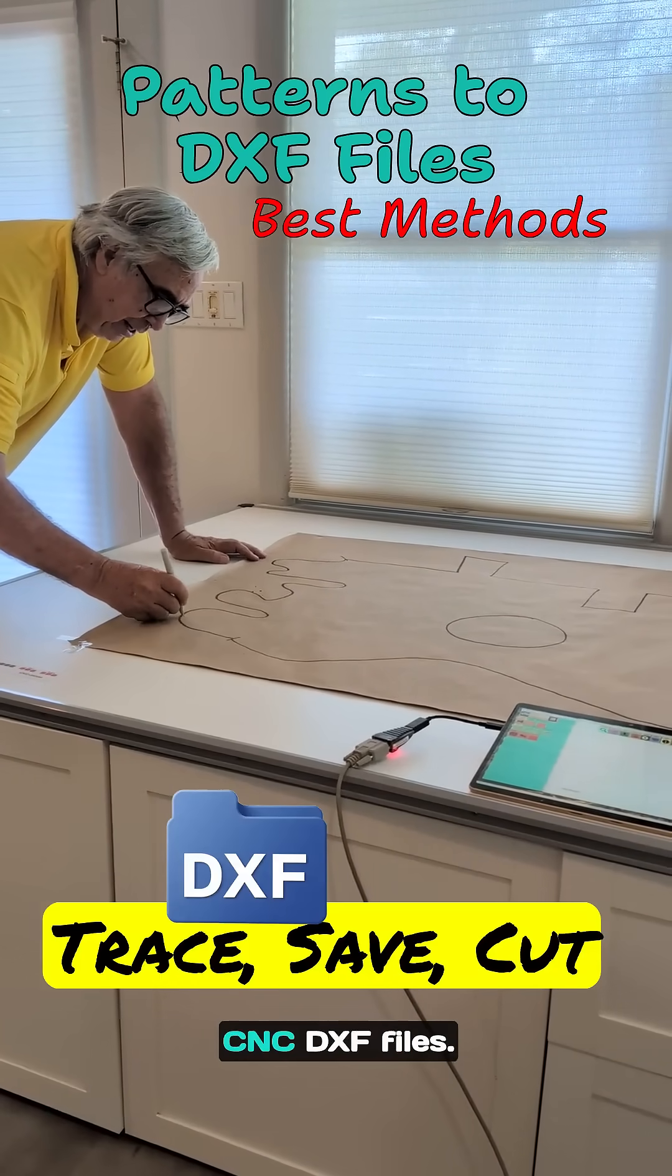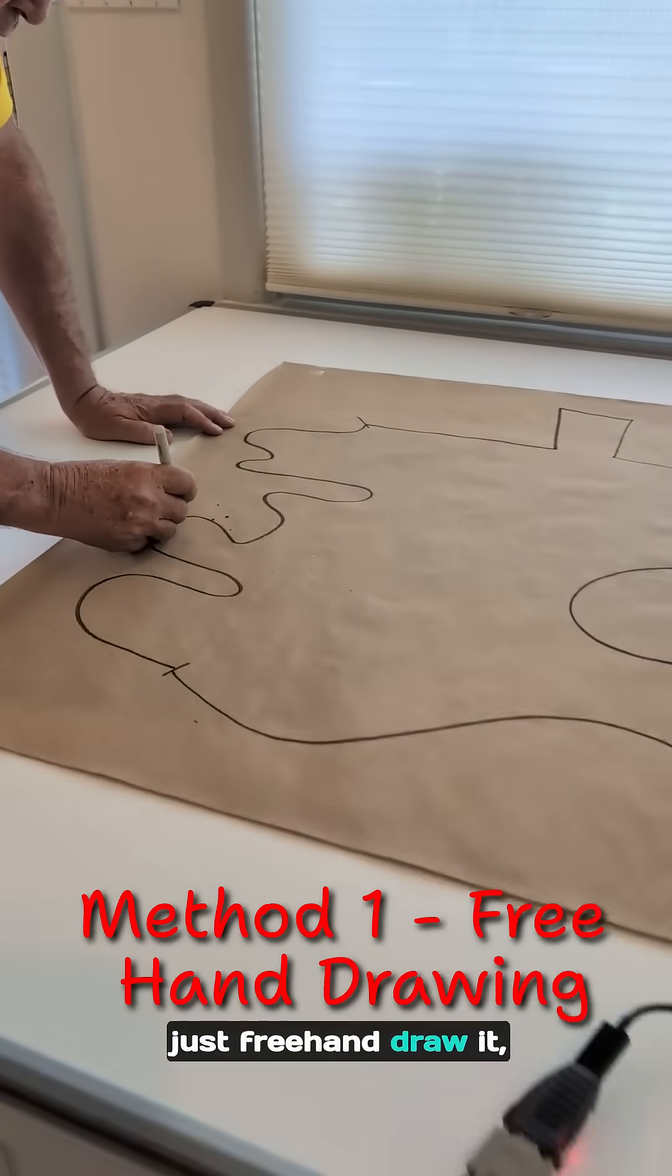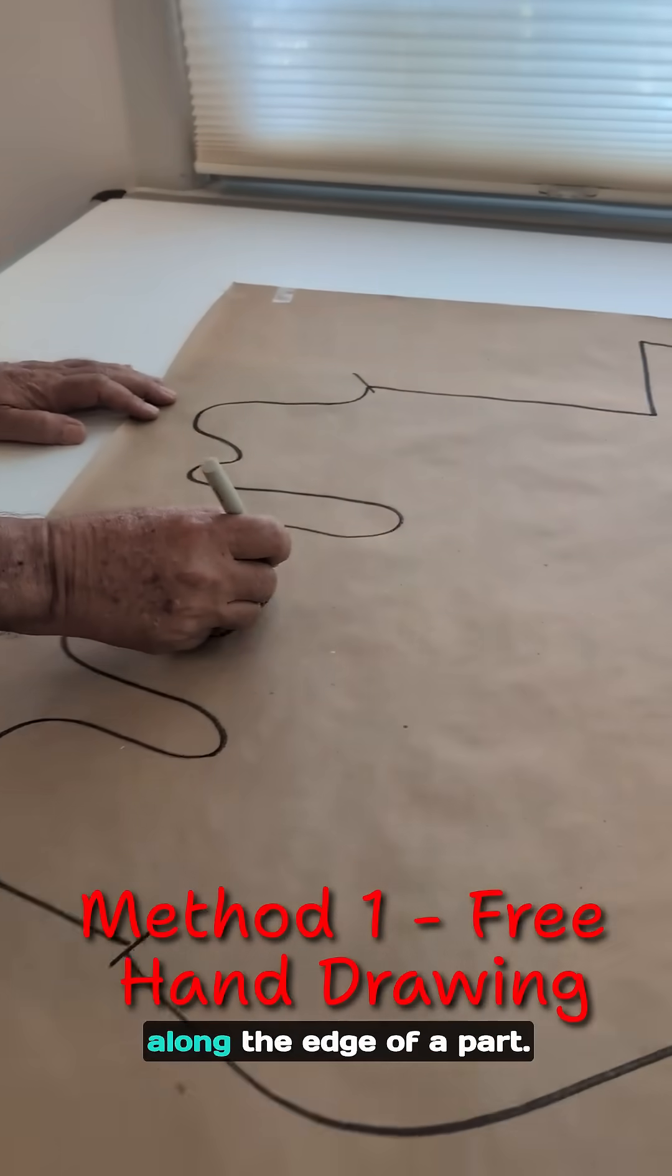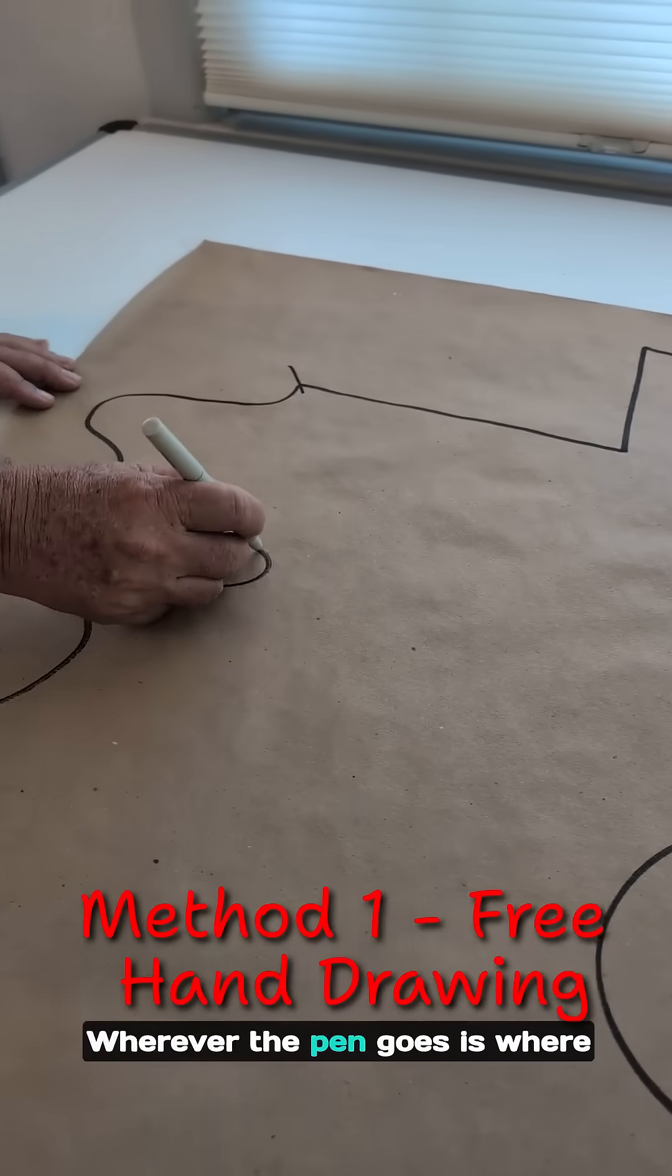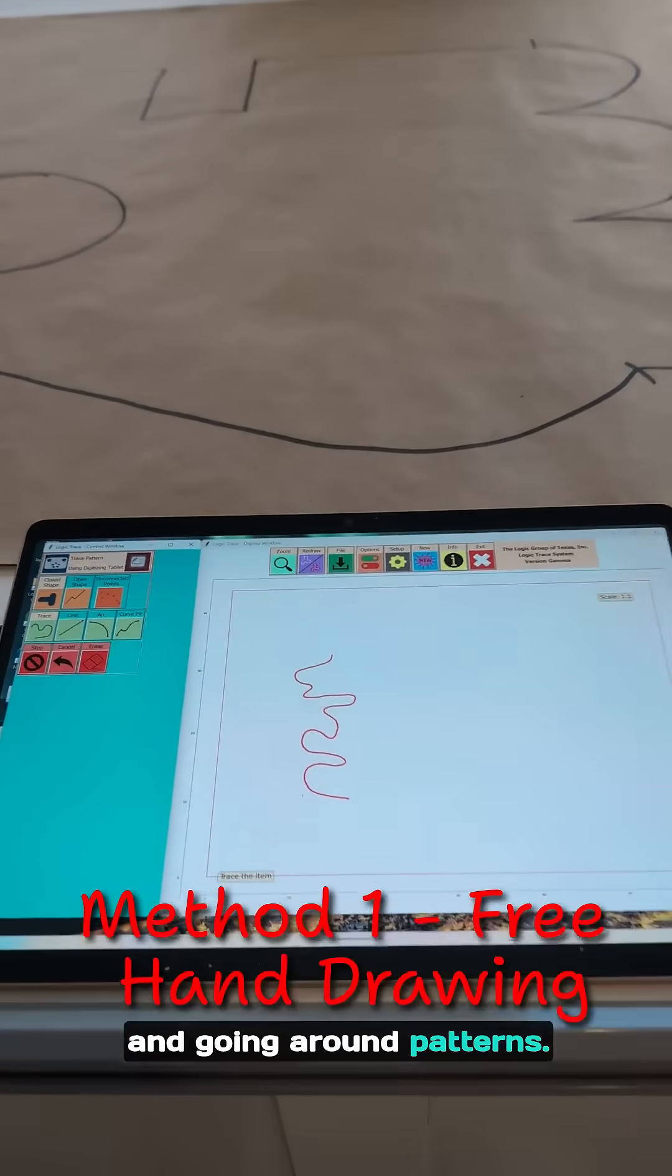Tracing techniques for CNC DXF files. Tracing method number one: freehand drawing. Just trace along a pattern or along the edge of a part. Wherever the pin goes is where you'll get a file. Great for complicated designs and going around patterns.